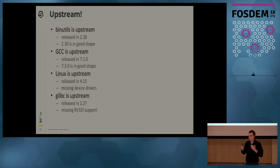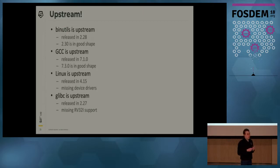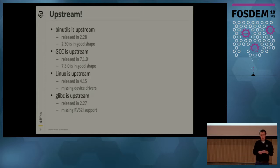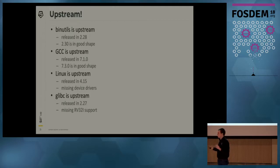The key development in the current state of RISC-V is that our software is now upstream. Binutils has been upstream for about a year, originally releasing in 2.28; the 2.30 release is pretty solid with no known major problems. Similarly, GCC released in 7.1 about six to nine months ago; the current release 7.3, which came out a few days ago, is also pretty solid and can compile Linux and much of user software.